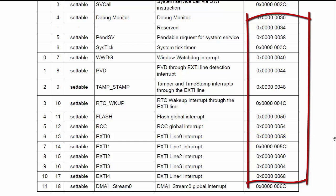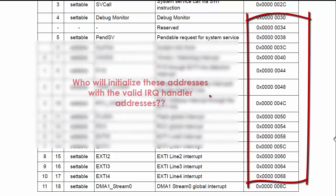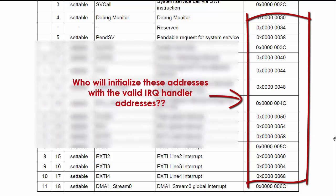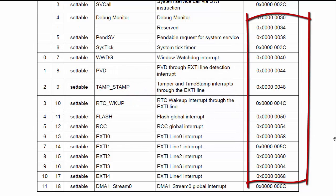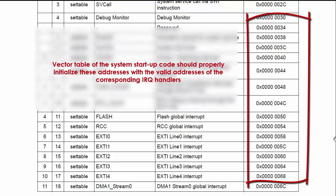So who initializes these addresses with valid IRQ handler addresses? The answer is that this is usually done by the vector table of the system startup code, which is our next topic of discussion.